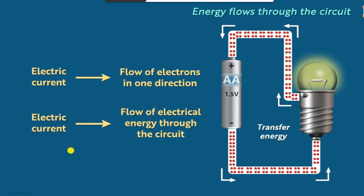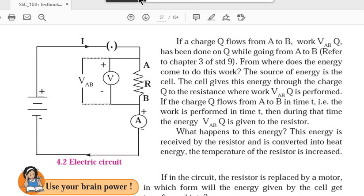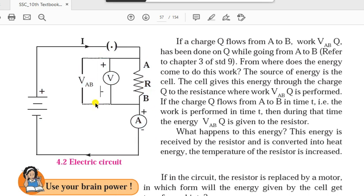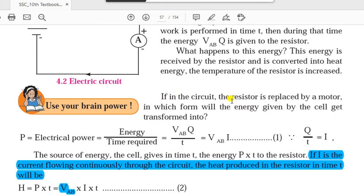Electric current means the flow of electrical energy through the circuit. With the help of the circuit diagram, we have a battery connected across two terminals A and B — simply a resistance or bulb — and two devices: an ammeter which measures current, and a voltmeter which measures the voltage across AB, called V_AB. Now if the resistor in the circuit is replaced by a motor, in which form will the energy given by the cell get transferred? That is the question for you to answer.